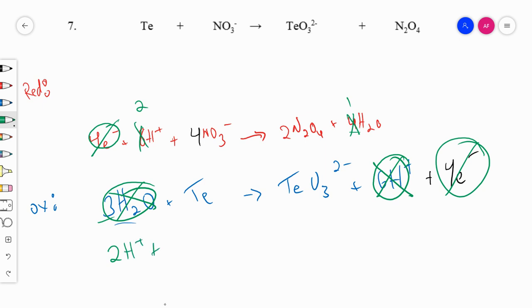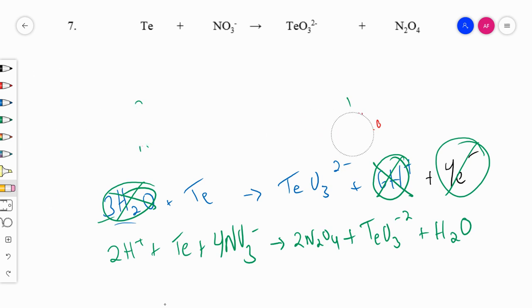Two H plus plus tellurium plus four NO3 minus yields two N2O4 plus TeO3 2 minus plus H2O. That's it. But that would be if it's an acidic solution.